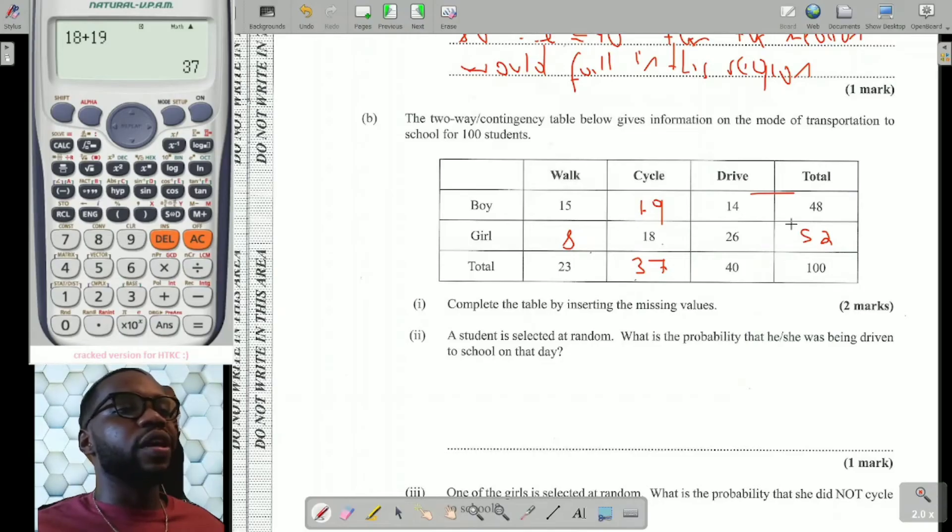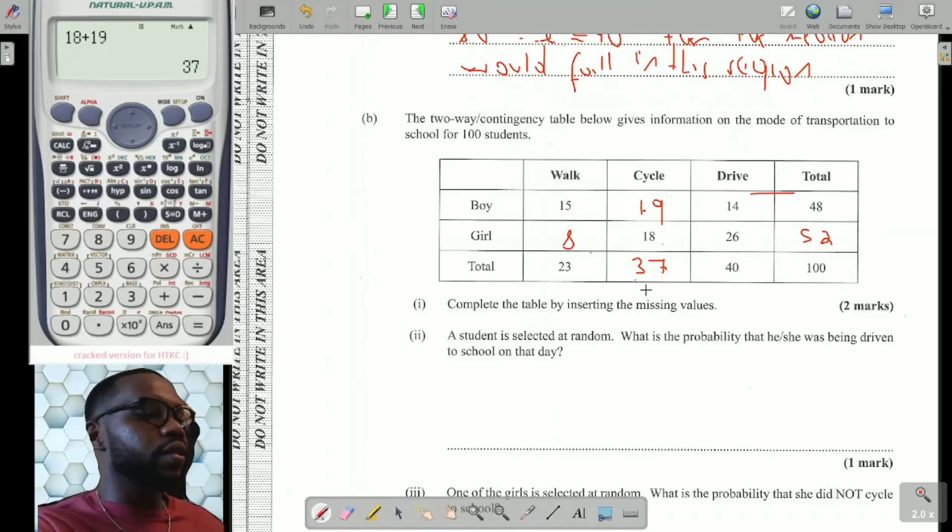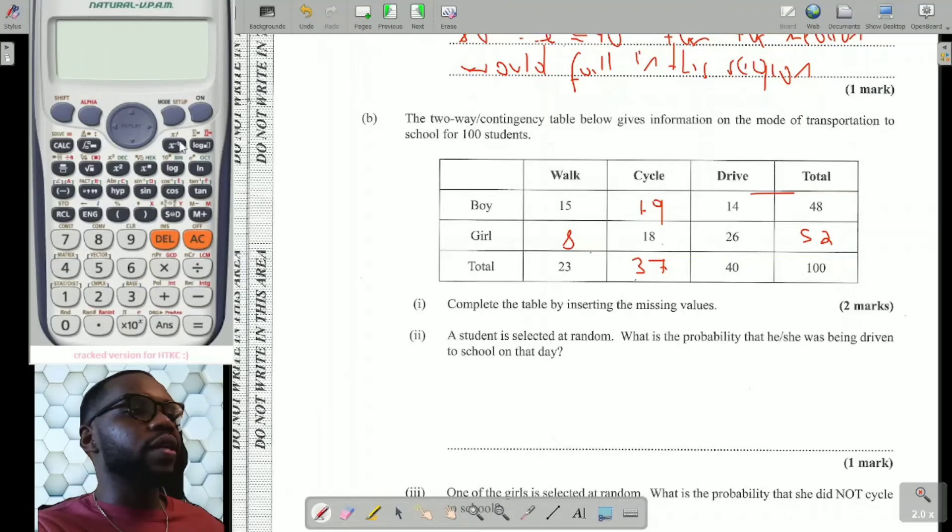You have completed the table. If you want, you can add up going across just to make sure your answers are correct. So I would add 15, 19, and 14 just to check my answers. 15 plus 19 plus 14 equals 48, so we're done with that.